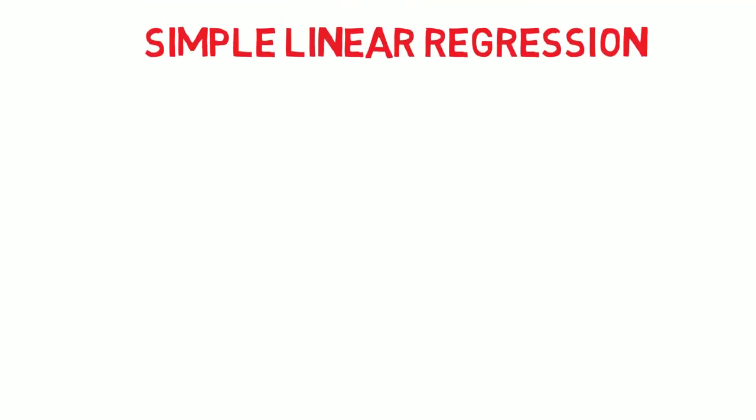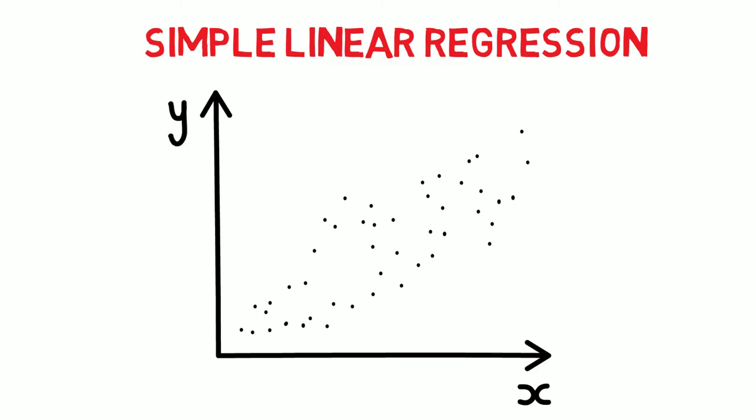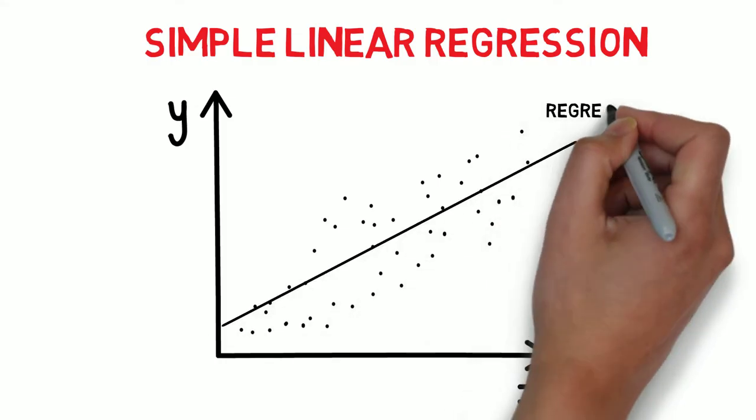So what is linear regression? Here is an example data set based on two variables. A simple linear regression model attempts to explain the relationship between the two variables using a best fitting straight line, called a regression line.